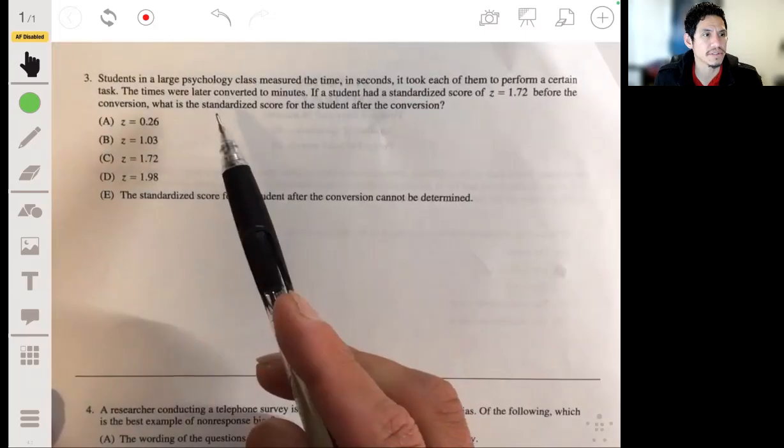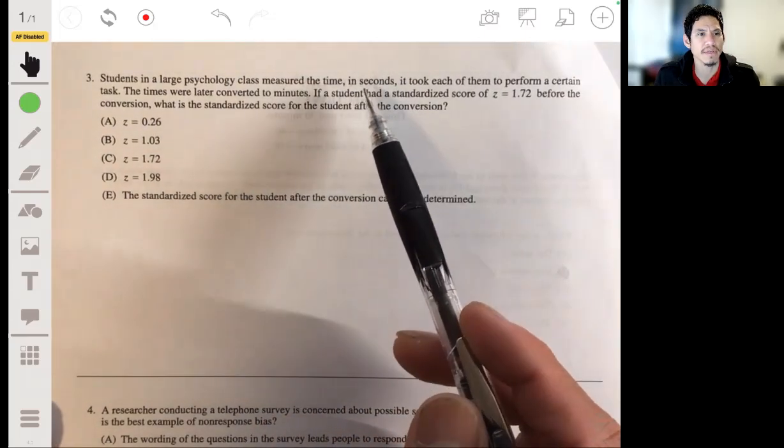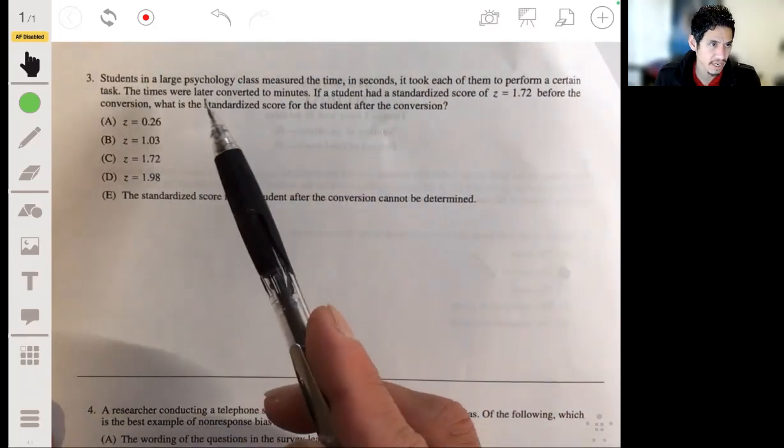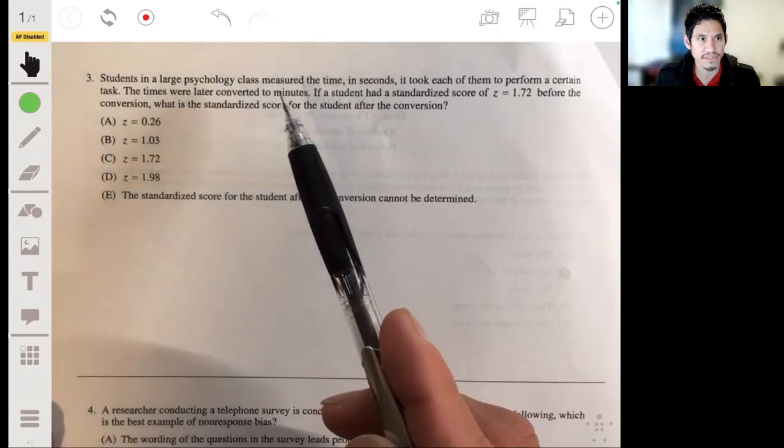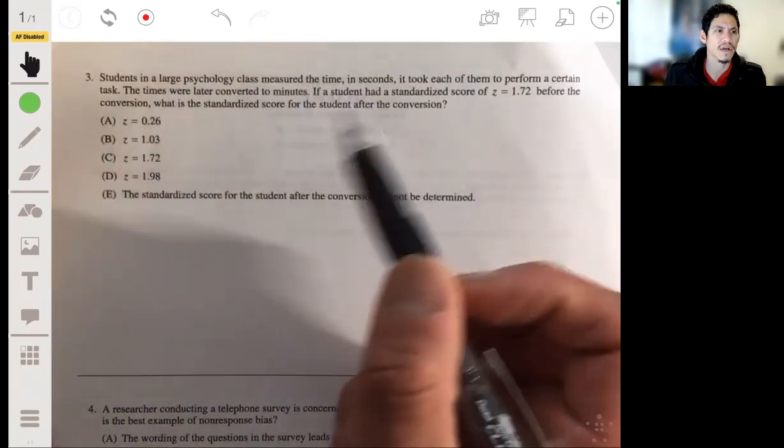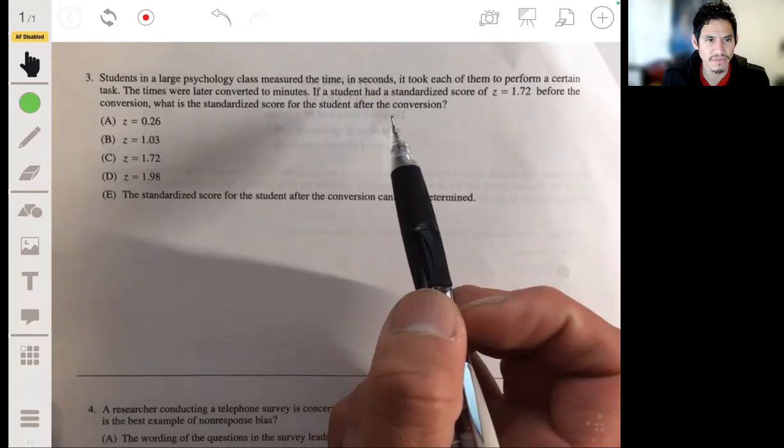Problem three: students in a large psychology class measured the time in seconds it took each of them to perform a certain task. Times were later converted to minutes. The student had a standardized score of Z equals 1.72 before the conversion. What is the standardized score from the student after the conversion?